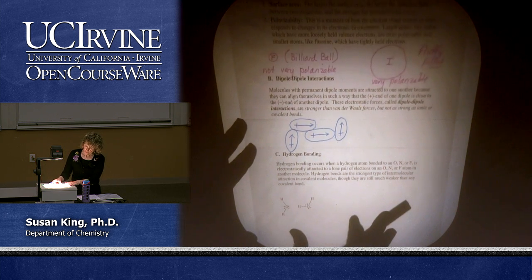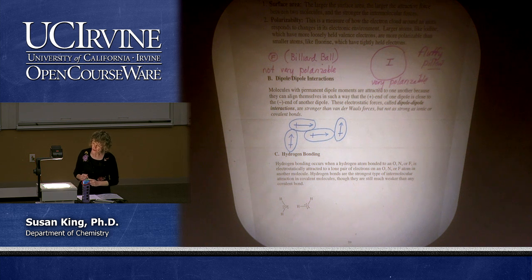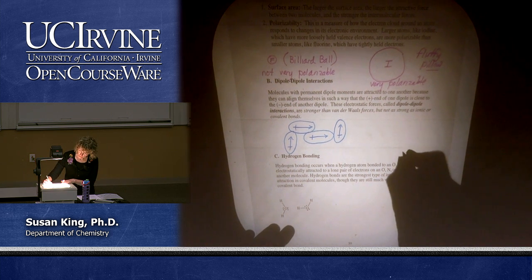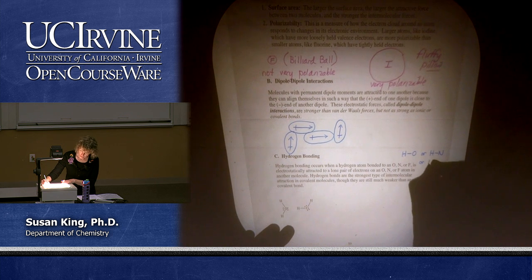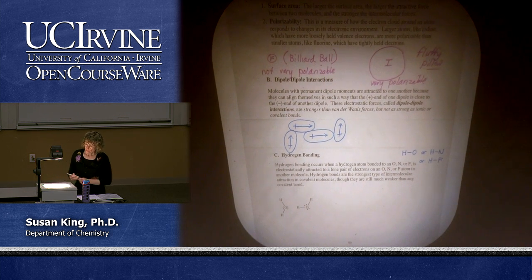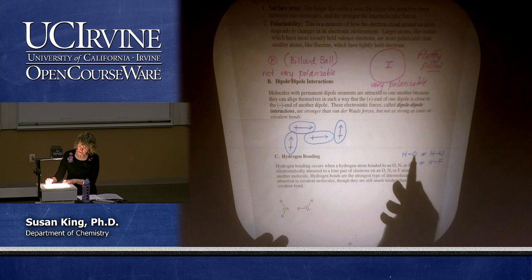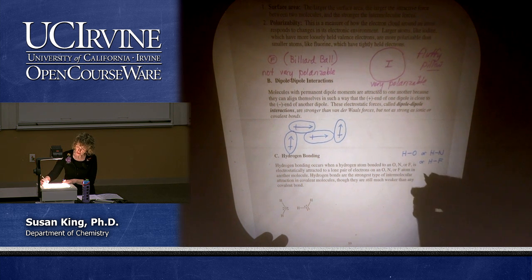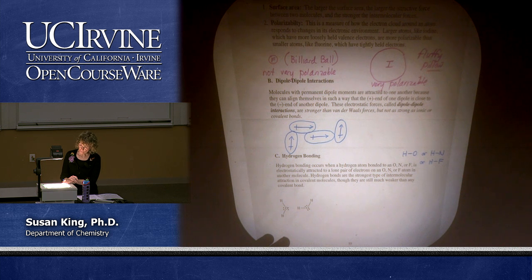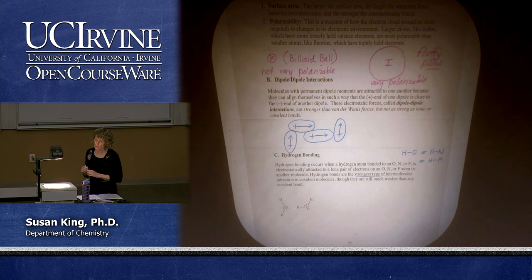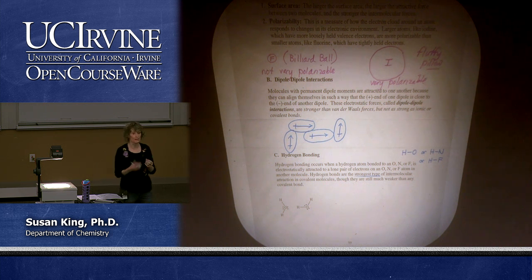The third type of interaction is hydrogen bonding. It occurs when a hydrogen atom bonded to an oxygen, nitrogen, or fluorine is electrostatically attracted to a lone pair of electrons on an oxygen, nitrogen, or fluorine atom in another molecule. Hydrogen bonds are the strongest type of intermolecular attraction in covalent molecules, but they are much weaker than a covalent bond. There is a common misconception that a hydrogen bond is a real bond — it is not. It is an intermolecular attraction.